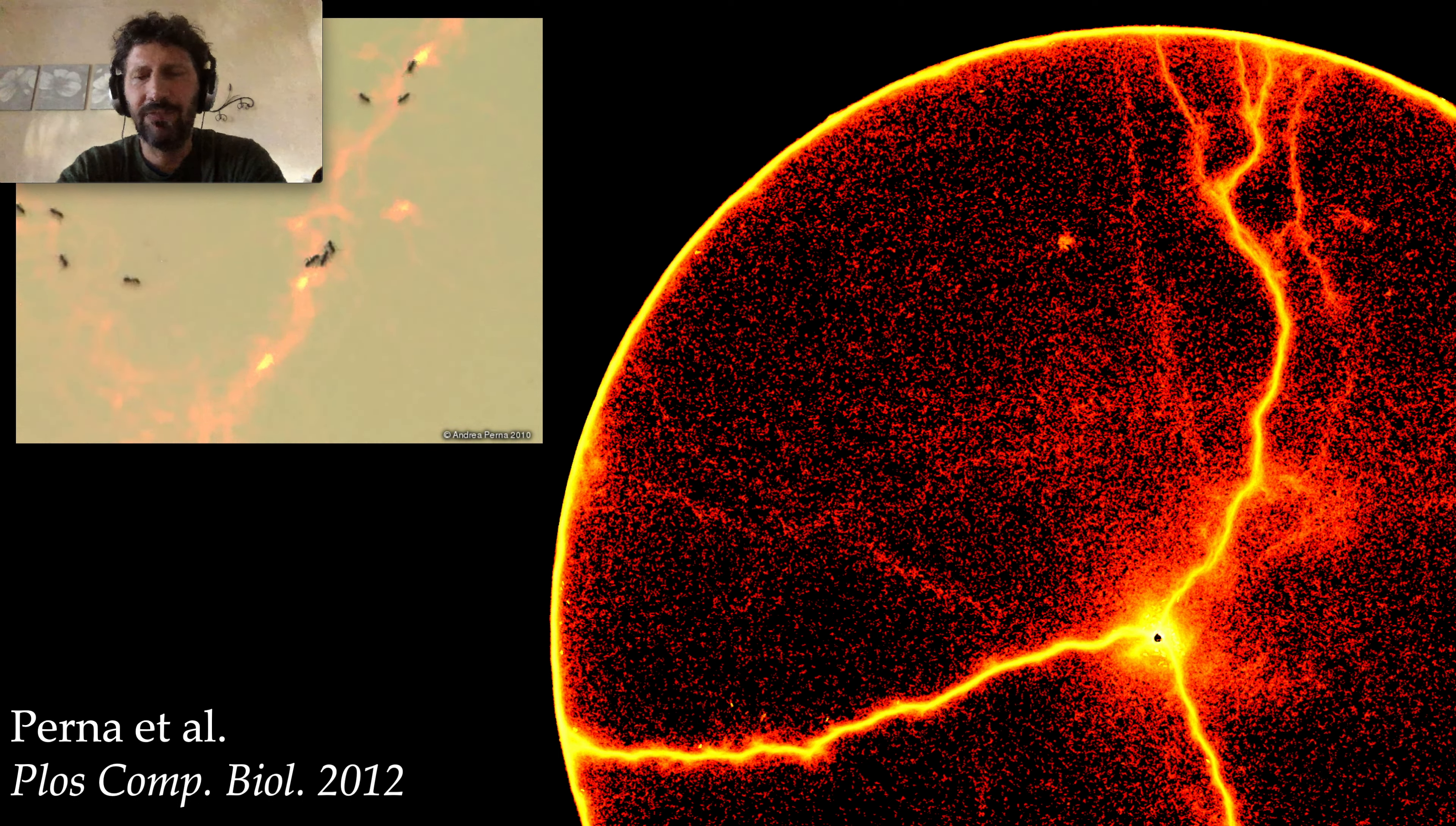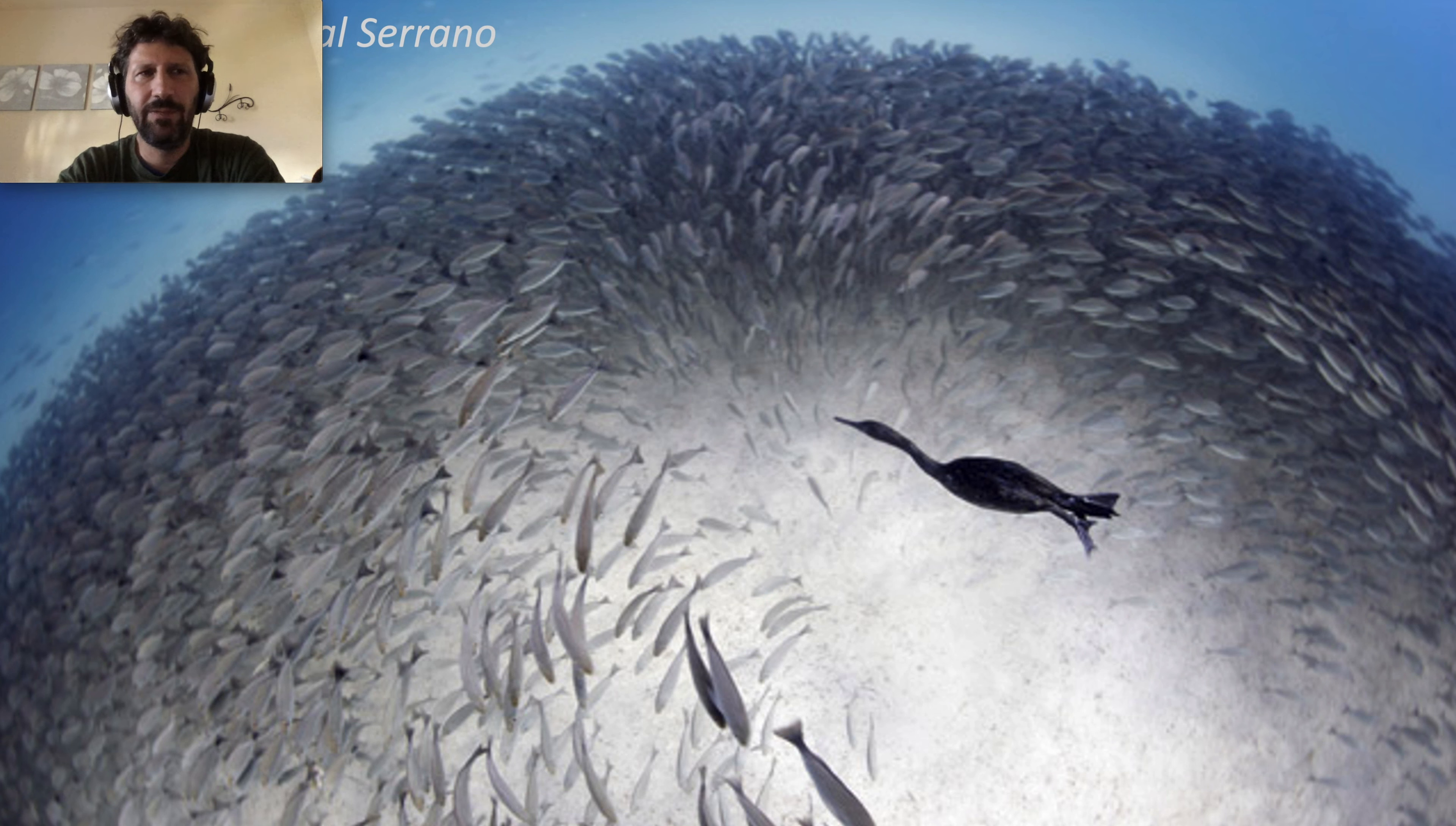One of the pattern formation phenomena that I've studied in more detail is flocking. In this case, the pattern is the pattern of movement of tens, hundreds, or even thousands of animals that move together in synchrony. We can try to understand this in terms of mechanisms—how each individual coordinates its actions, its movement with other individuals. But of course, there is a function associated with this, for instance whether or not a fish will be eaten by a predator.